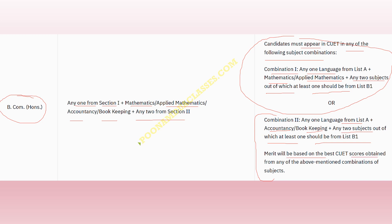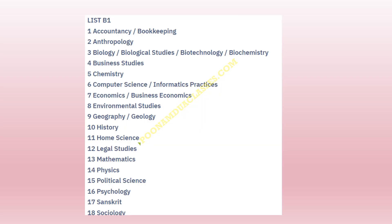Merit will be based on CUET score — there is no fixed benchmark like 60–70%; rather, the merit list will be prepared from toppers' scores. This is List B1 — please check List B1 carefully. For commerce students, accountancy/bookkeeping is the major subject you can choose. Business studies is almost always available. If computer science or economics is available in your school, you can opt for those as well. Mathematics is compulsory if you want to pursue BCom Honors.